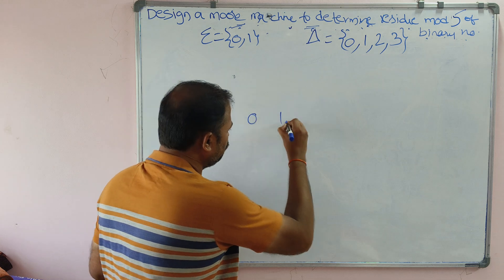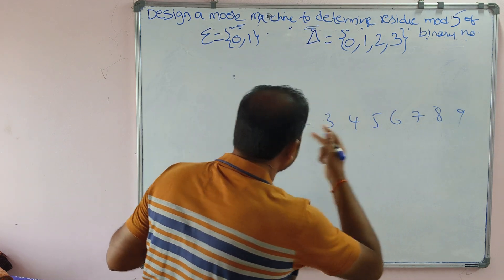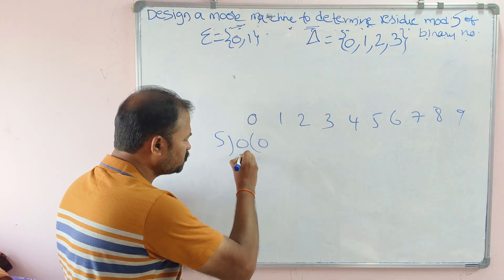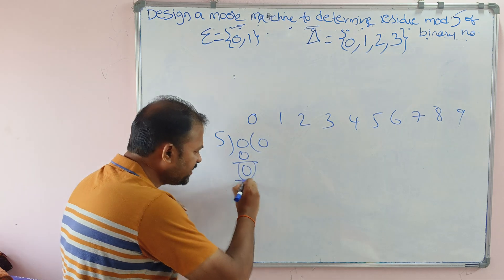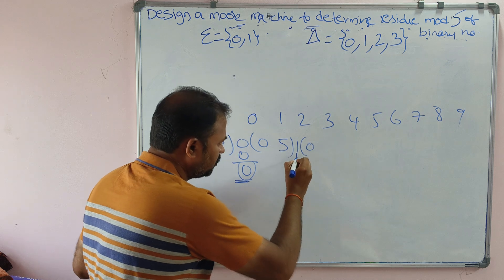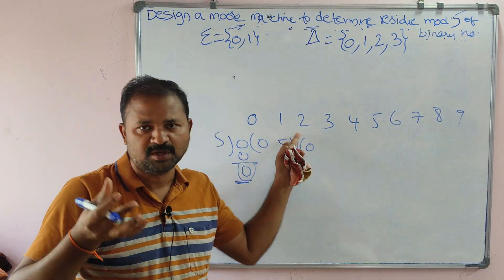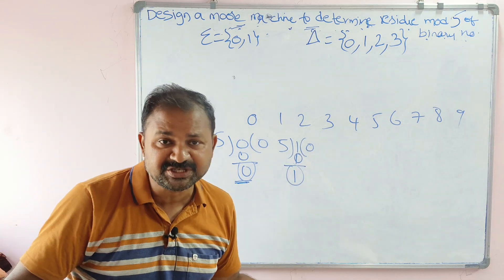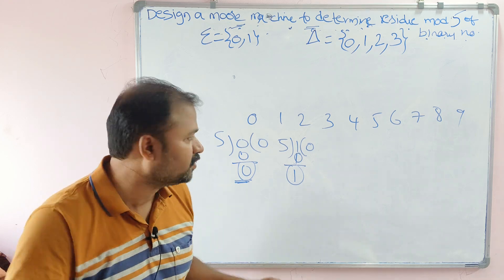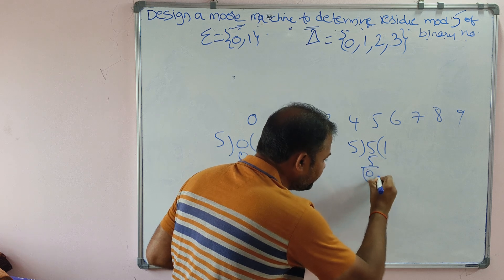Let us see some examples: 0, 1, 2, 3, 4, 5, 6, 7, 8, 9, and likewise. We divide each number by 5. 5 times 0 is 0, so 0 minus 0 means remainder 0. For 1: 5 times 0 is 0, so 1 minus 0 means remainder 1. For 2: remainder is 2. For 4: remainder is 4. For 5: 5 times 1 is 5, so 5 minus 5 means remainder 0.